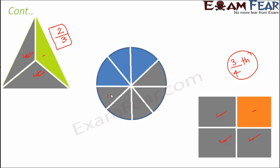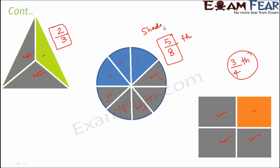Look at this circle. Five parts out of eight are shaded, so five eighths of the circle is shaded. Now if I ask you what fraction of this circle is not shaded - three parts are not shaded, so three eighths of the circle is not shaded.